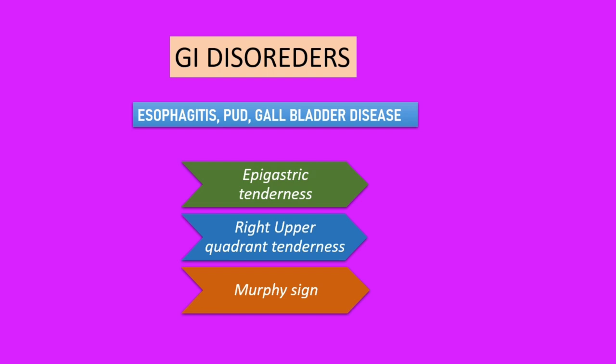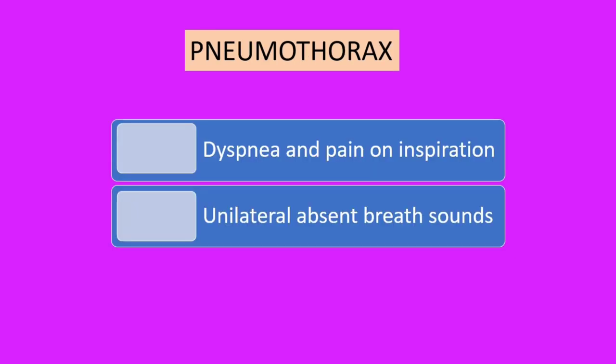Gastrointestinal disorders can also present with chest pain, including esophagitis, peptic ulcer disease, and gallbladder disease. Patients will usually have local GI signs such as epigastric tenderness, right upper quadrant tenderness, or Murphy's sign.